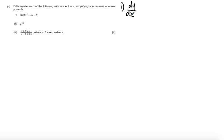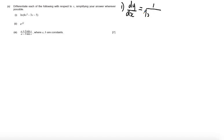This is a function, 4x squared minus 3x minus 5, within a function, log x. So first of all, differentiating the outside function, we get 1 over the inside function — so 1 over 4x squared minus 3x minus 5.